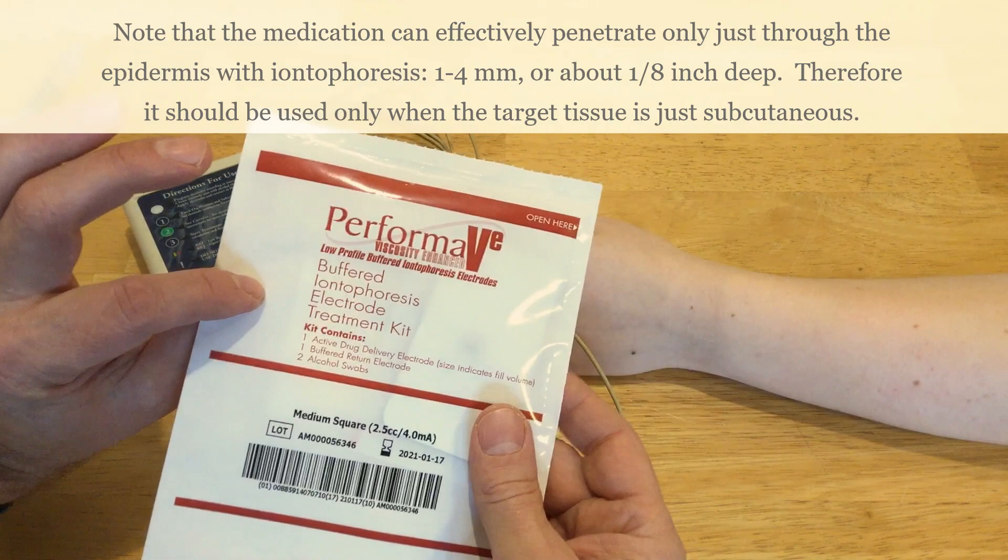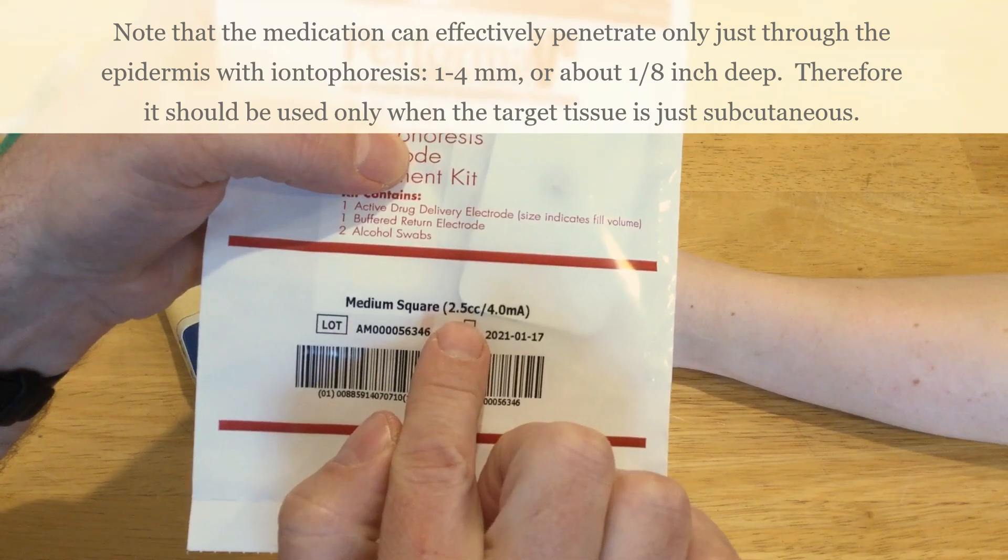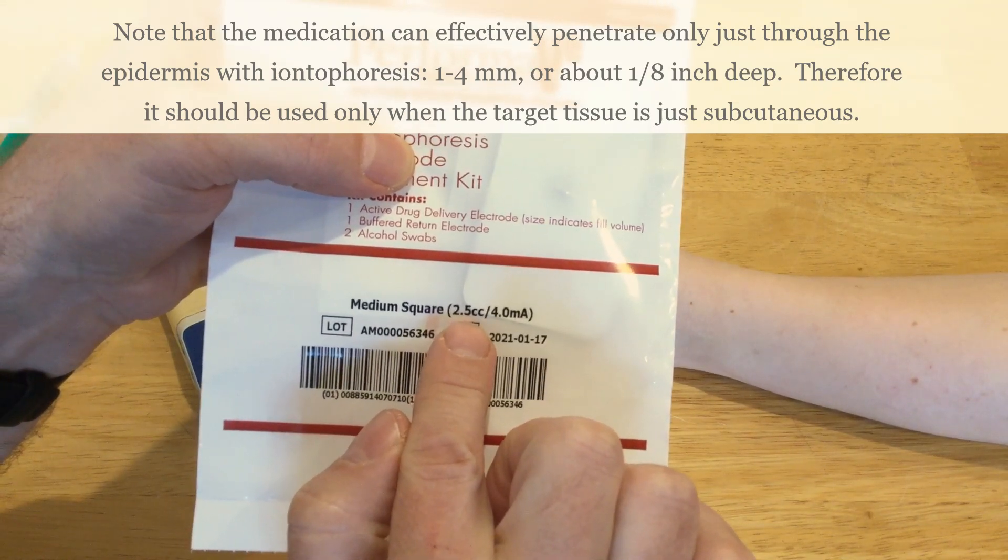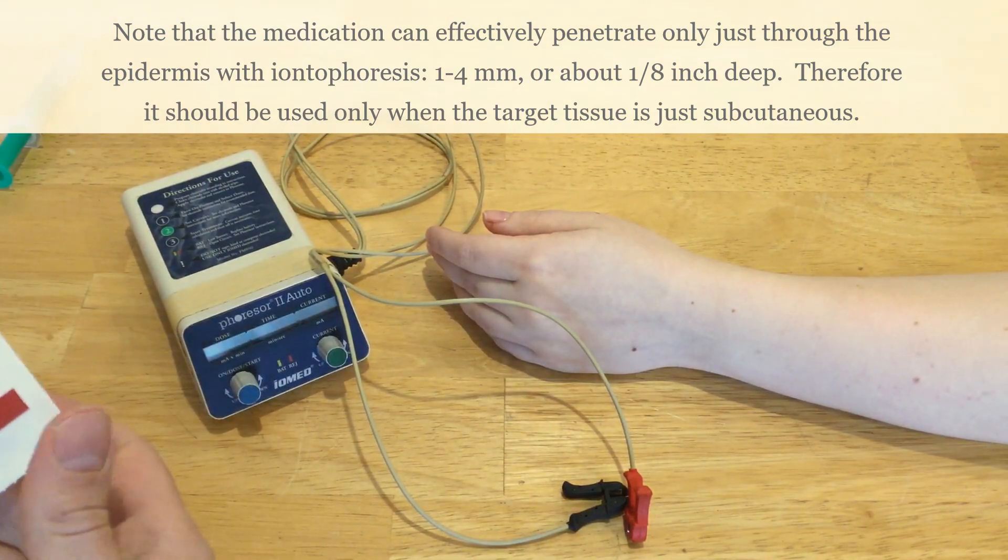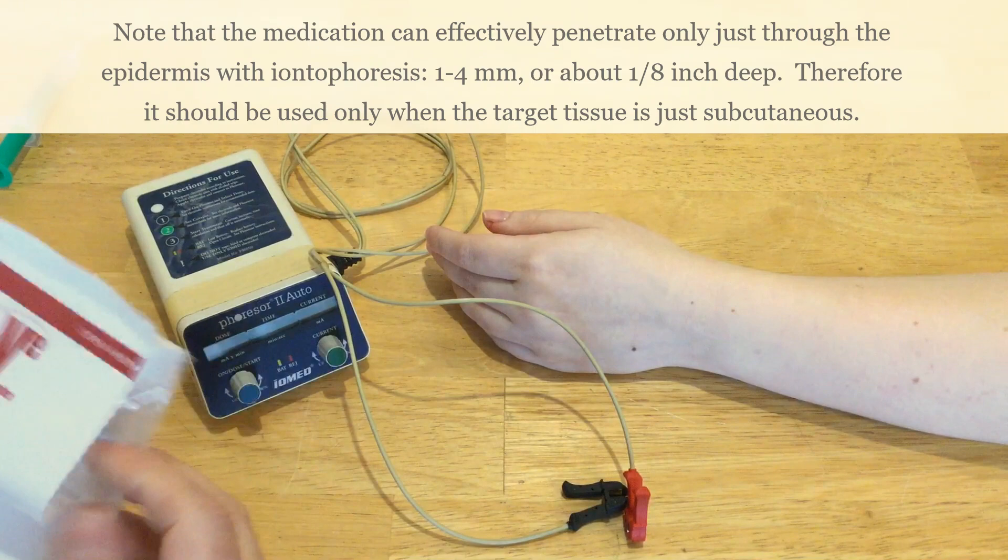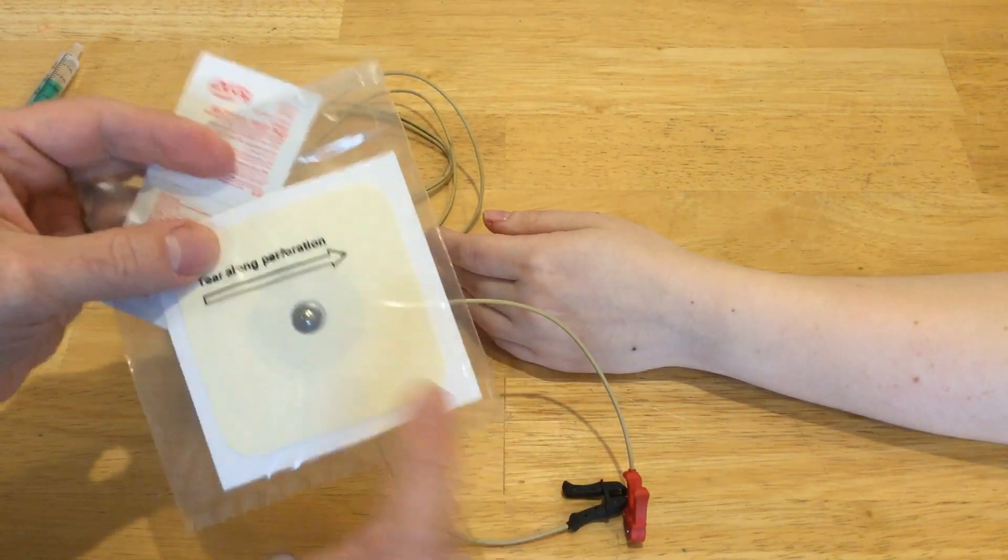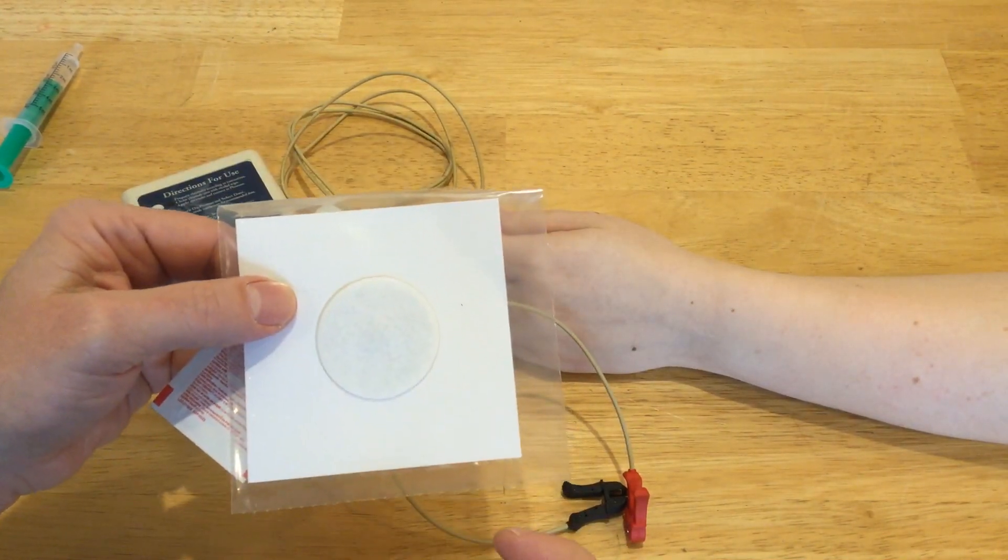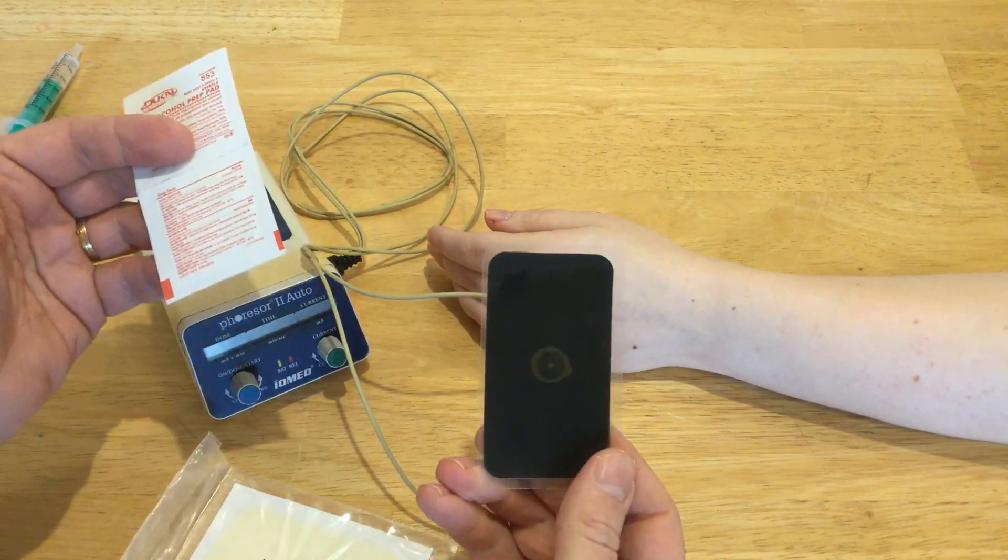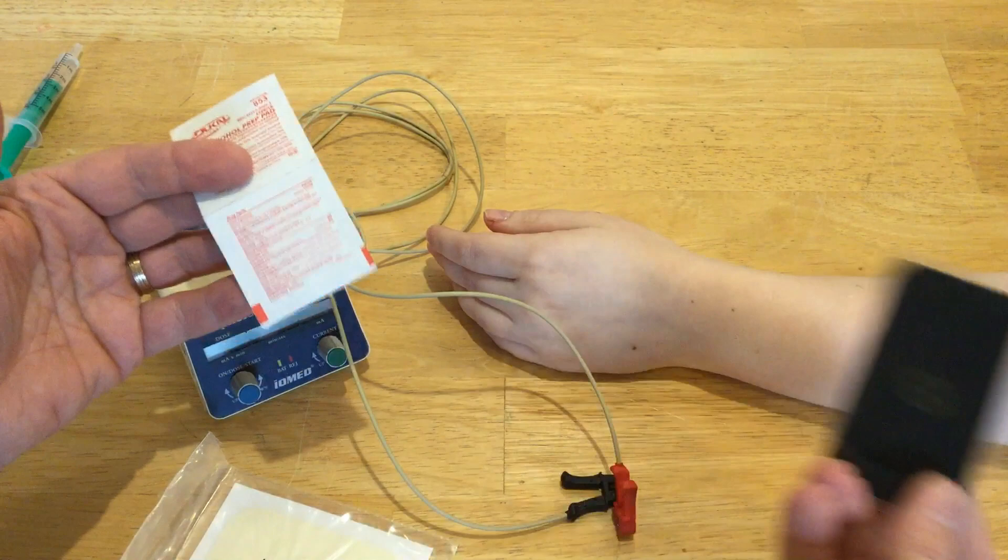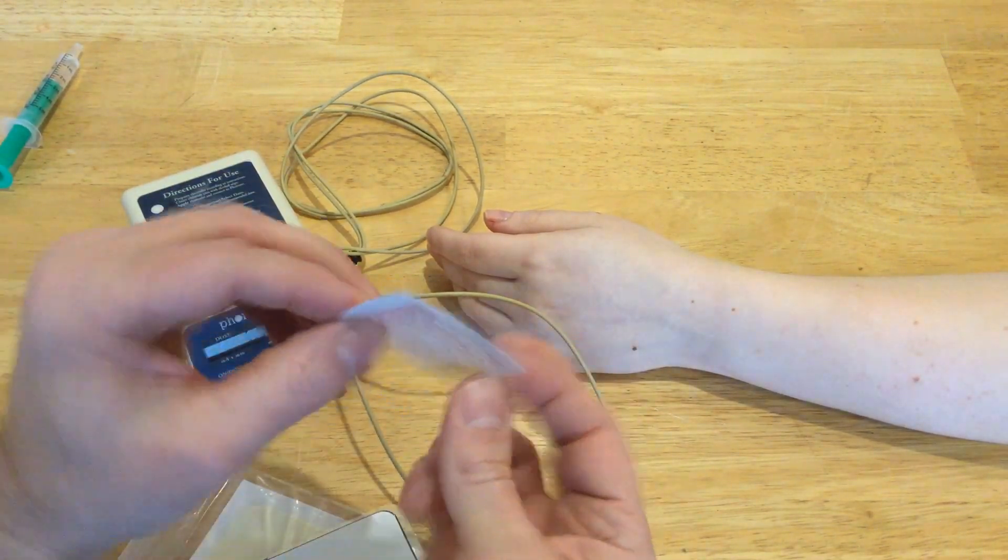I'm just going to use some iontophoresis electrodes here. They're always labeled with how much medication you can put on them - in this case, two and a half cubic centimeters or milliliters. It comes with a medication electrode that has a little sponge, a dispersive electrode that is placed somewhere else to complete the circuit, and alcohol wipes.